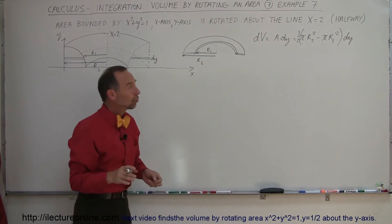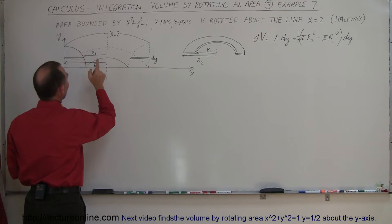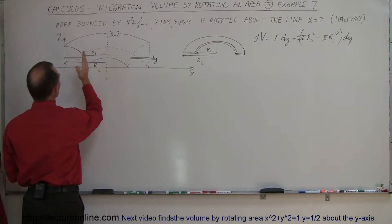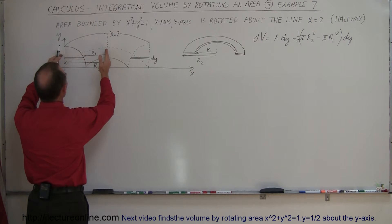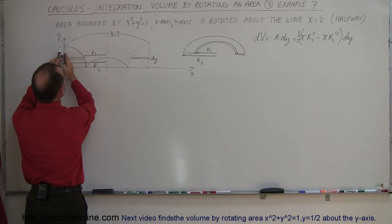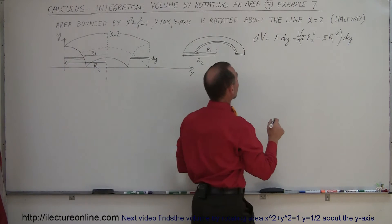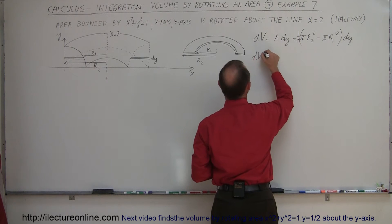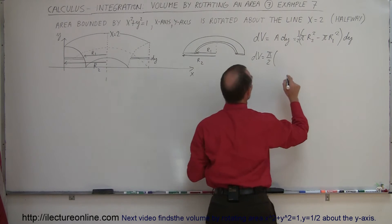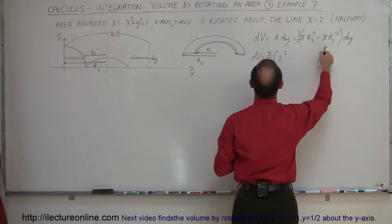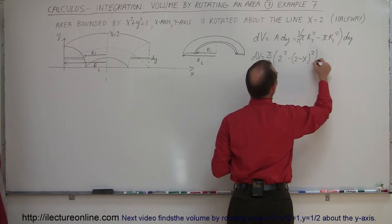Now we substitute R1 and R2 in terms of x and y. R2 is the easiest — it goes from the axis of rotation to the line x equals 2, so R2 equals 2. R1 equals the full distance of 2 minus the x distance from the axis to the curve x squared plus y squared equals 1, so R1 equals 2 minus x. Factoring out pi, we get DV equals pi over 2 times (4 minus (2 minus x) squared) times dy.